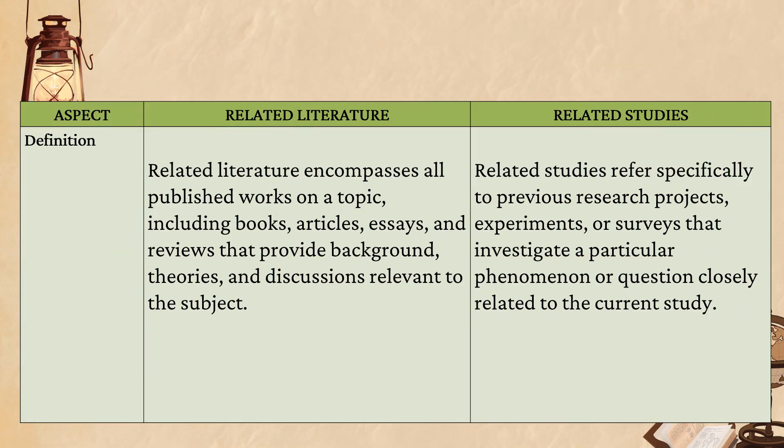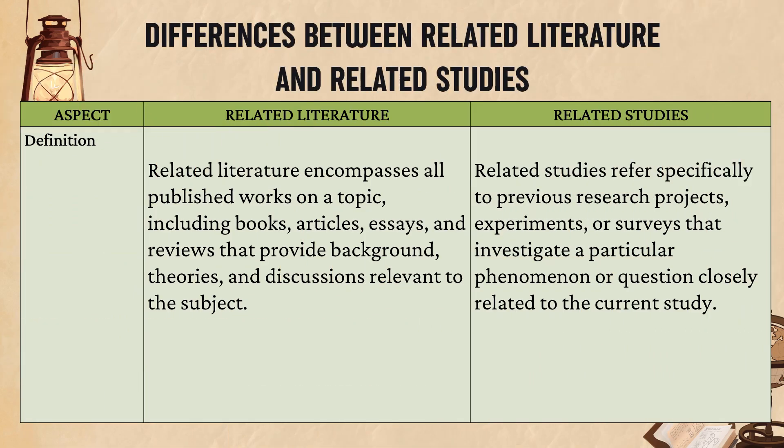Let's discuss the differences between related literature and related studies. By definition, related literature encompasses all published works on a topic, including books, articles, essays, and reviews that provide background, theories, and discussions relevant to the subject.